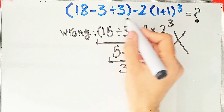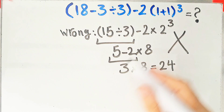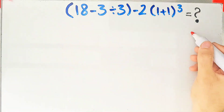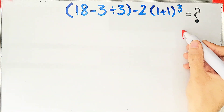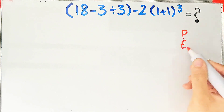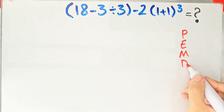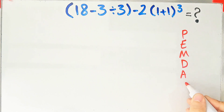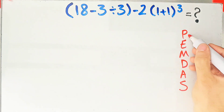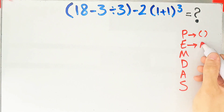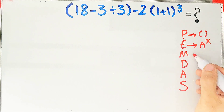Let's solve this question step by step together. To solve this question we need to follow the order of operations, which is PEMDAS. PEMDAS shows the priority of mathematical operations, and if you don't pay attention to this rule you get the wrong answer. P stands for parenthesis, E stands for exponent, M stands for multiplication.